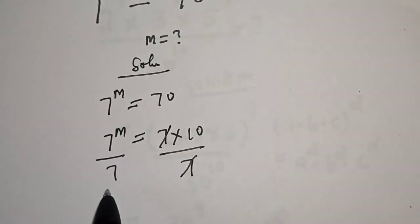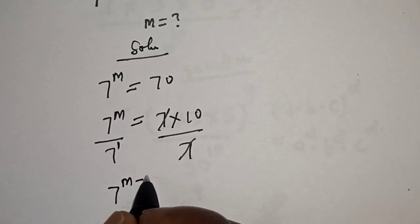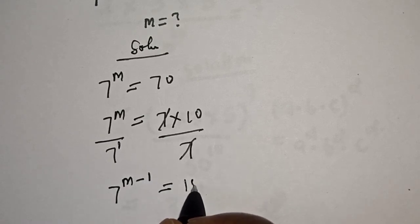This one will cancel, and this is also raised to power 1. We have 7 raised to power m minus 1 is equal to 10.